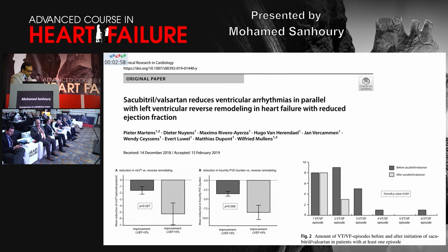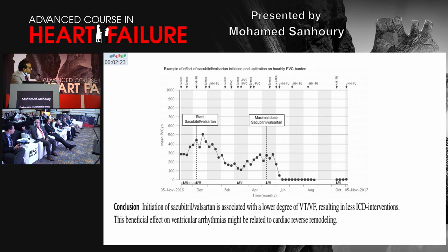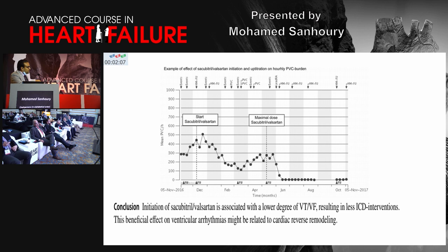In a trial demonstrating reverse remodeling with sacubitril/valsartan, an increase in ejection fraction of only 5% translated into a reduction in PVC load on 24-hour Holter monitoring and non-sustained VT. Most importantly, there was a reduction in appropriate ICD therapy. Patients implanted with ICD had less ventricular tachycardia and fibrillation and less need for ICD-delivered therapy after initiating this drug. After maximizing the dose of sacubitril/valsartan, the incidence of PVCs became negligible.